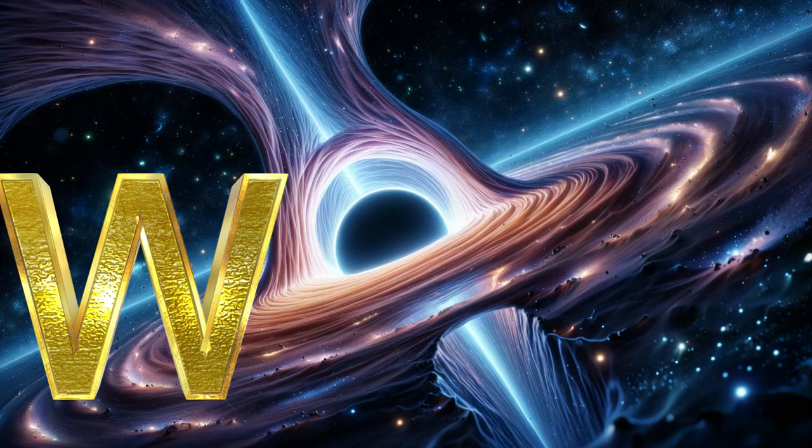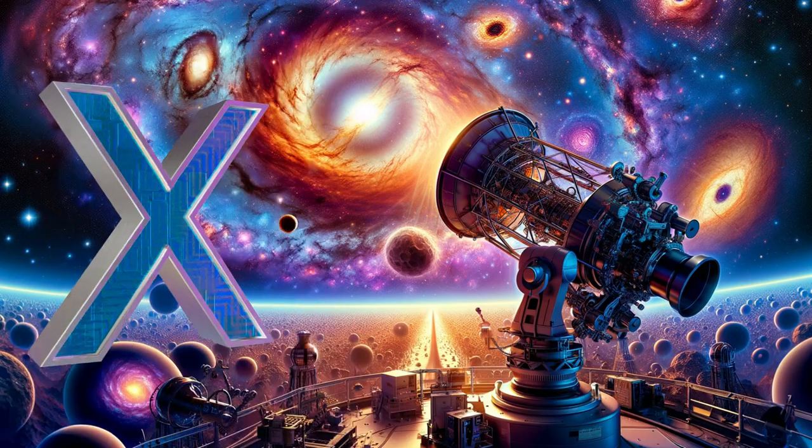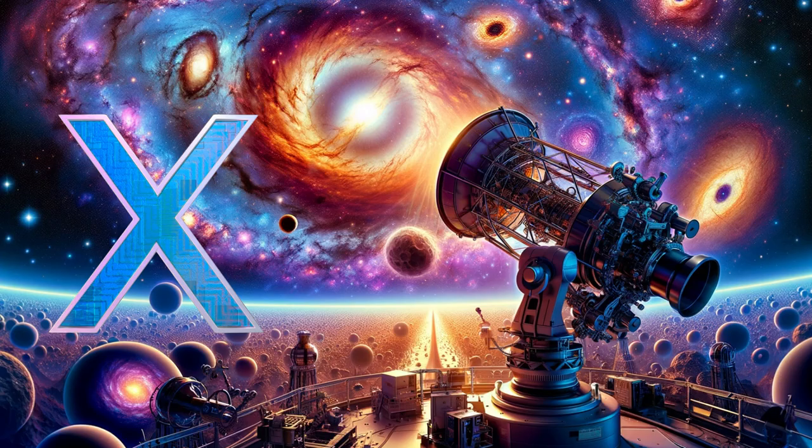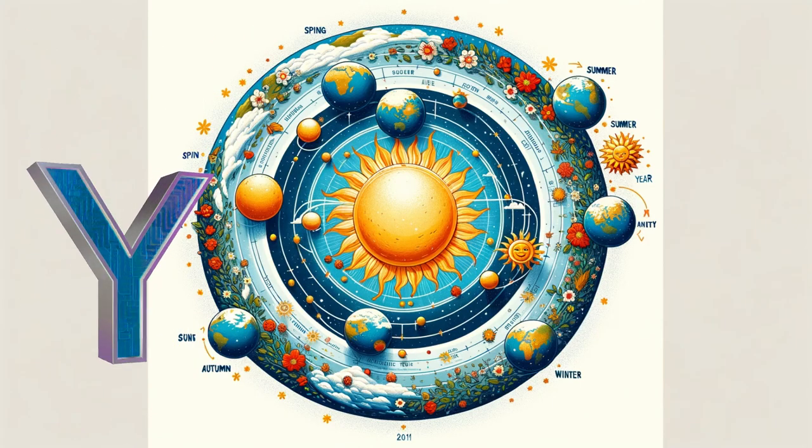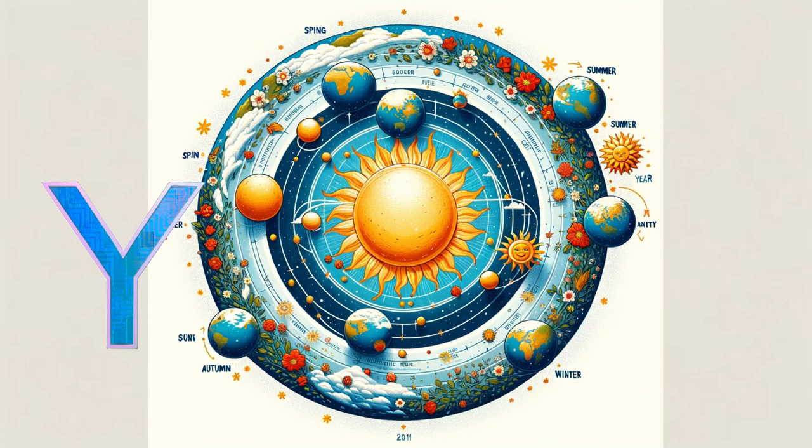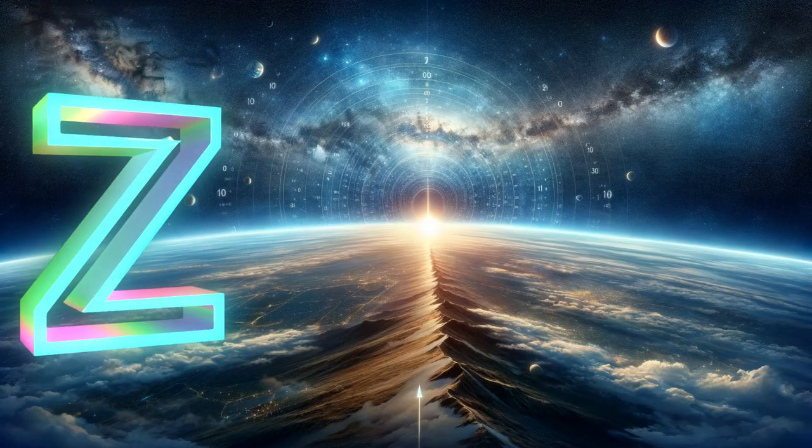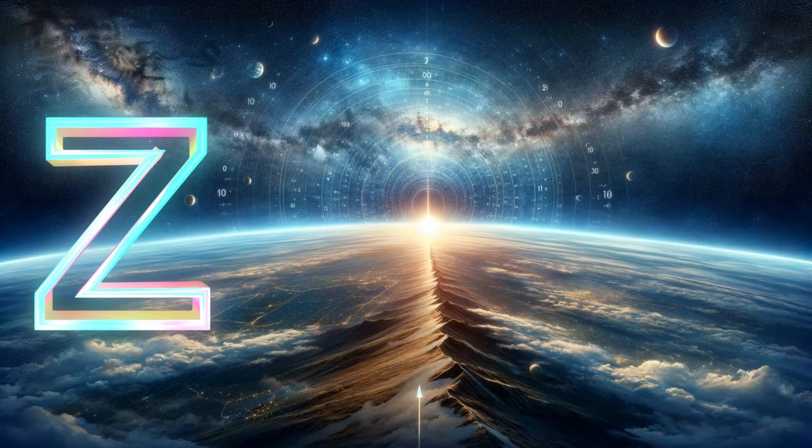R is for rocket, reaching for the stars. X is for X-ray, astronomy's science art. Y is for year, a trip around the sun. Z is for zenith, where the sky is one.